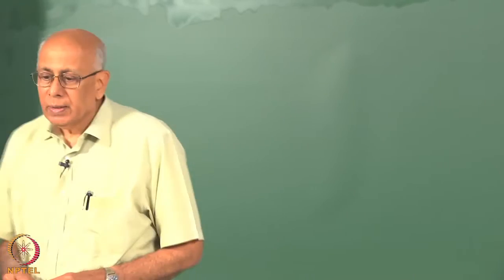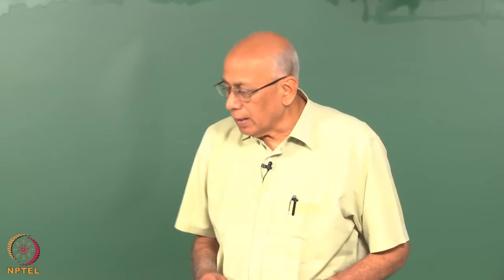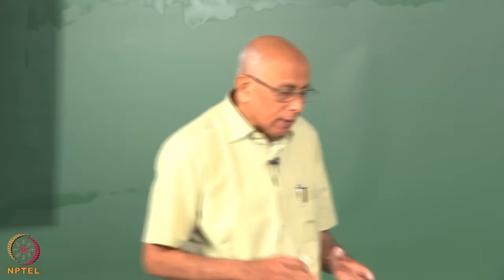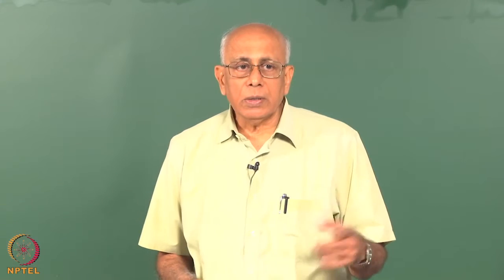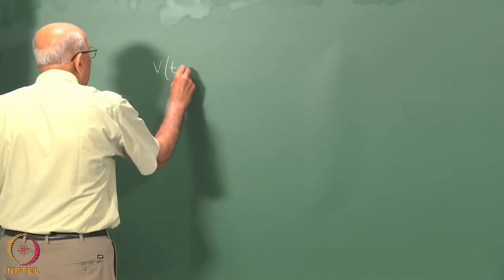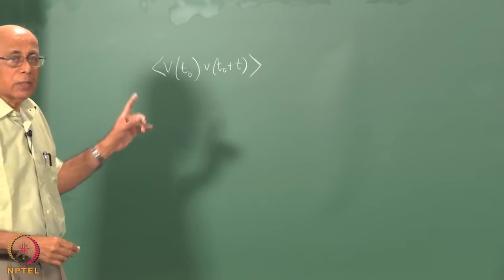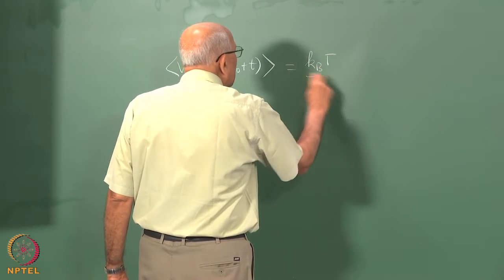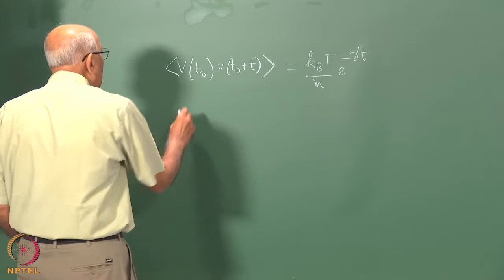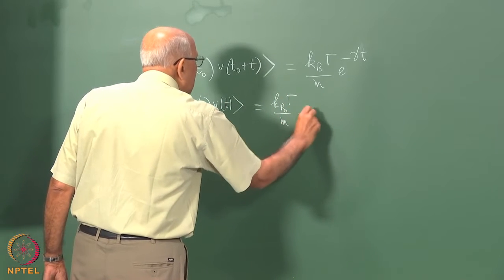Let us resume our discussion of the velocity process for a Brownian particle in a fluid. To recapitulate, we found that when the particle obeys the Langevin equation, its velocity process—a random process driven by Gaussian white noise—is exponentially correlated. Specifically, the correlation v(0)v(t) equals k_B T over m times e to the minus gamma t.